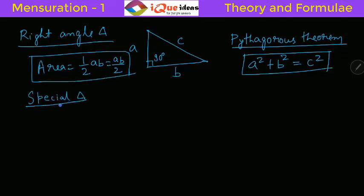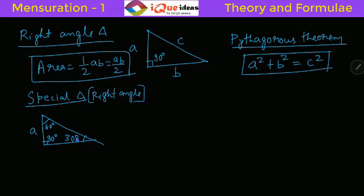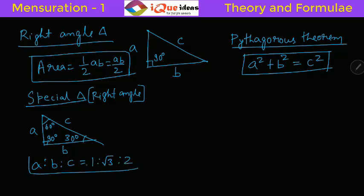There are some special right angle triangles you must memorize directly. The first is a triangle with angles 30 degrees, 60 degrees, and 90 degrees. If the smallest side is A (opposite 30 degrees), the second side is B (opposite 60 degrees), and C is the hypotenuse, then the ratio of sides A to B to C is 1 to root 3 to 2. The hypotenuse is double the smallest side and the middle side is root 3 times the smallest side.